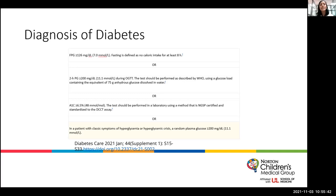If a patient has classic symptoms of hyperglycemia such as polyuria, polydipsia, nocturia, or if they're in hyperglycemic crisis, then a random plasma glucose of greater than 200 mg/dL in addition to those symptoms is adequate to make a diagnosis of diabetes.